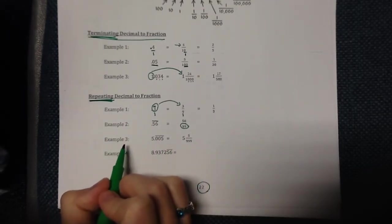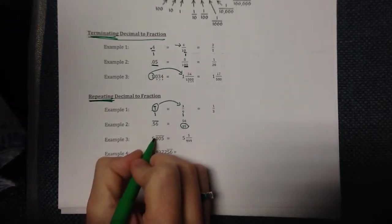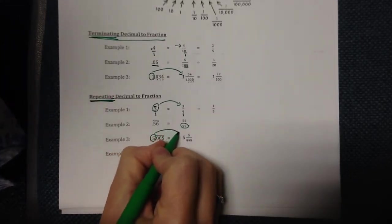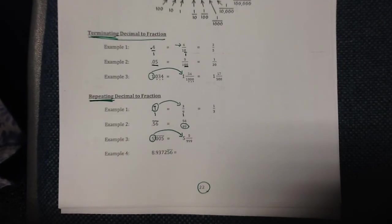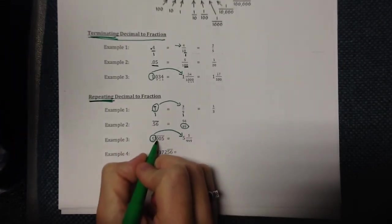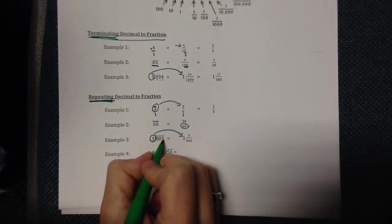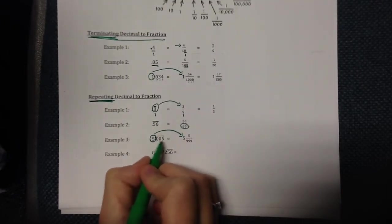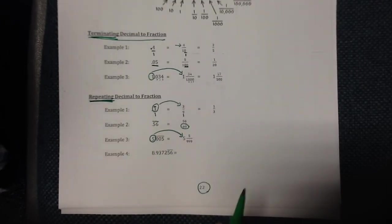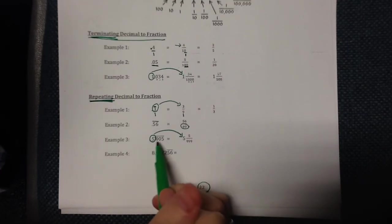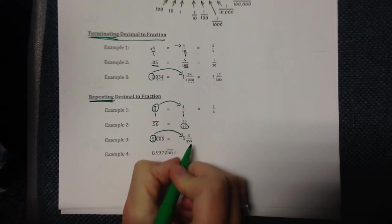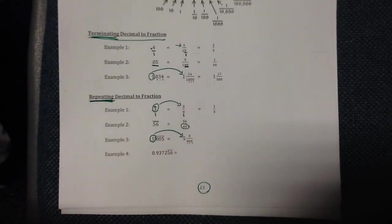In example number three, we have a five out in front — remember, if there's a number out in front it just goes in front of the fraction. Then we have zero-zero-five, which is three numbers underneath the repeat bar, so we put three nines underneath the five.